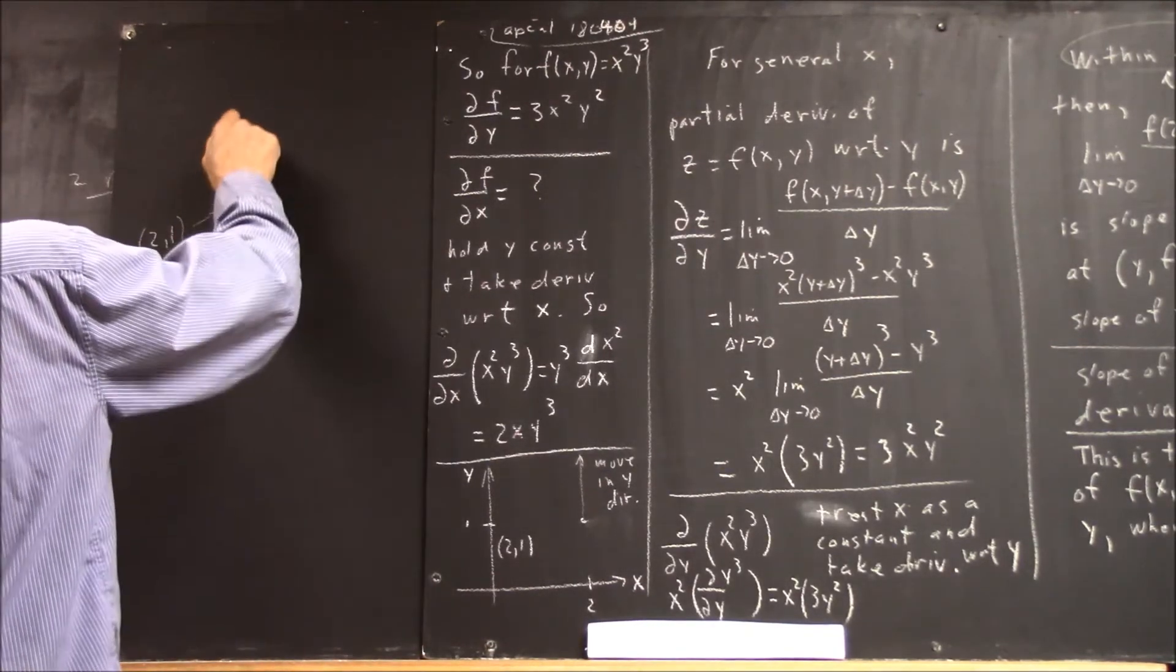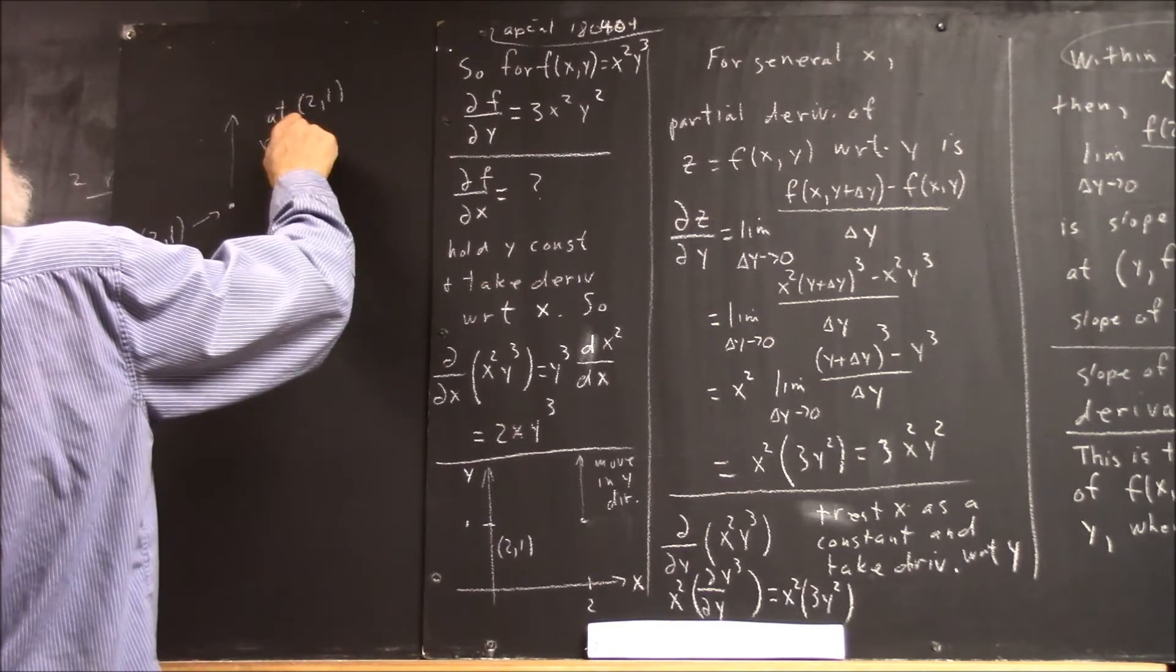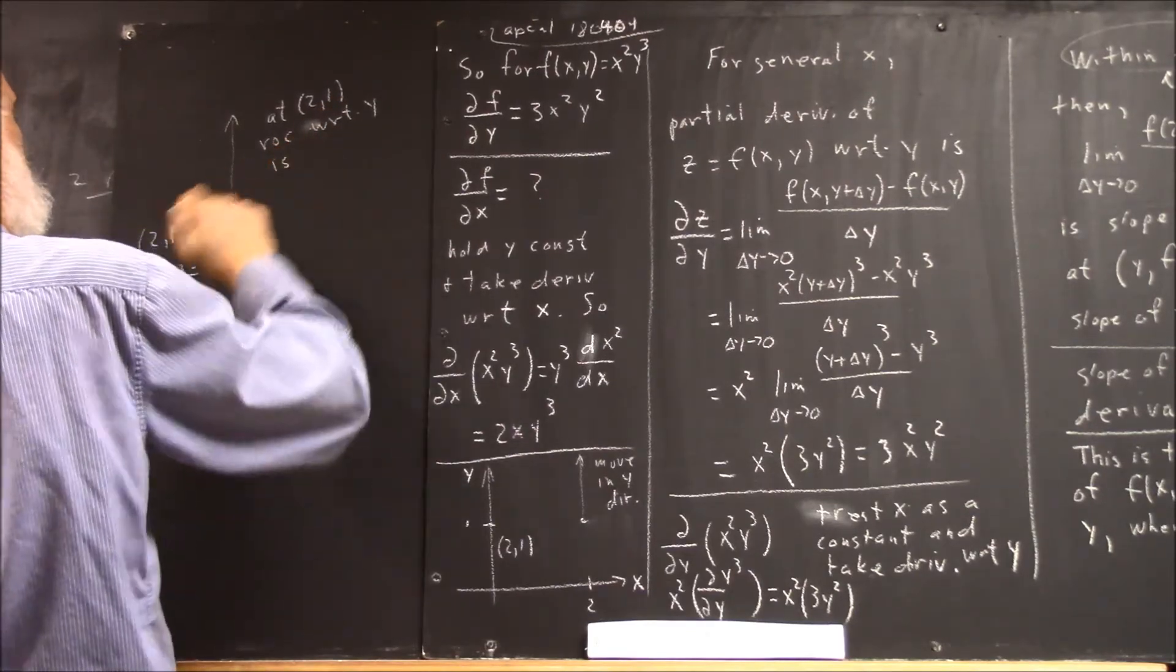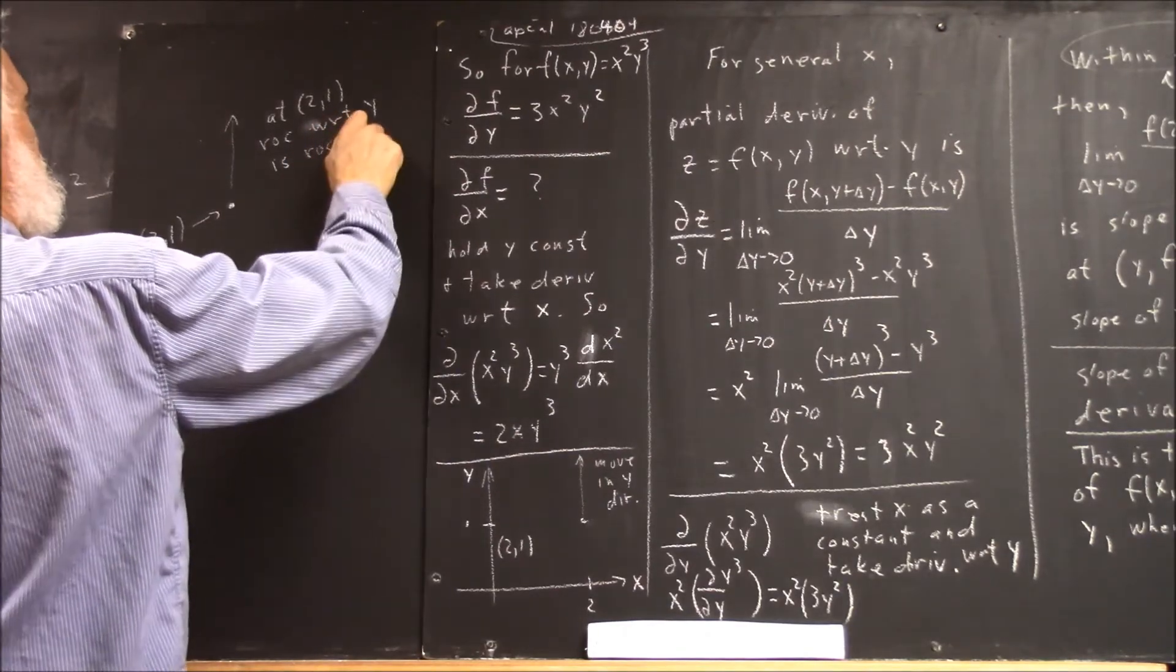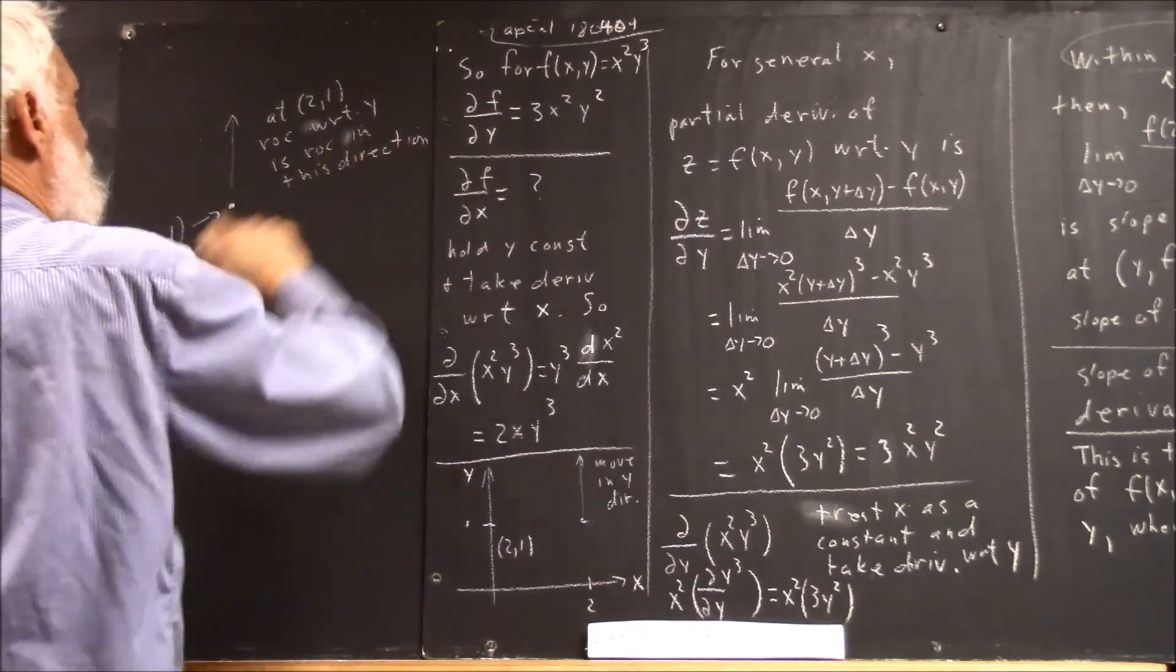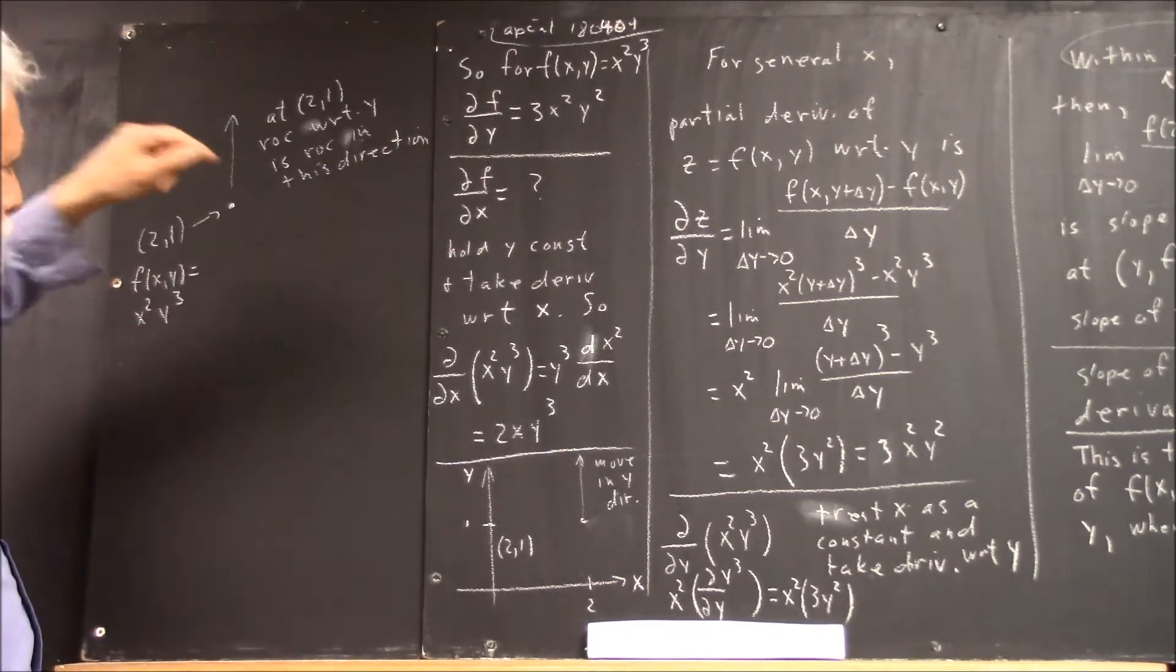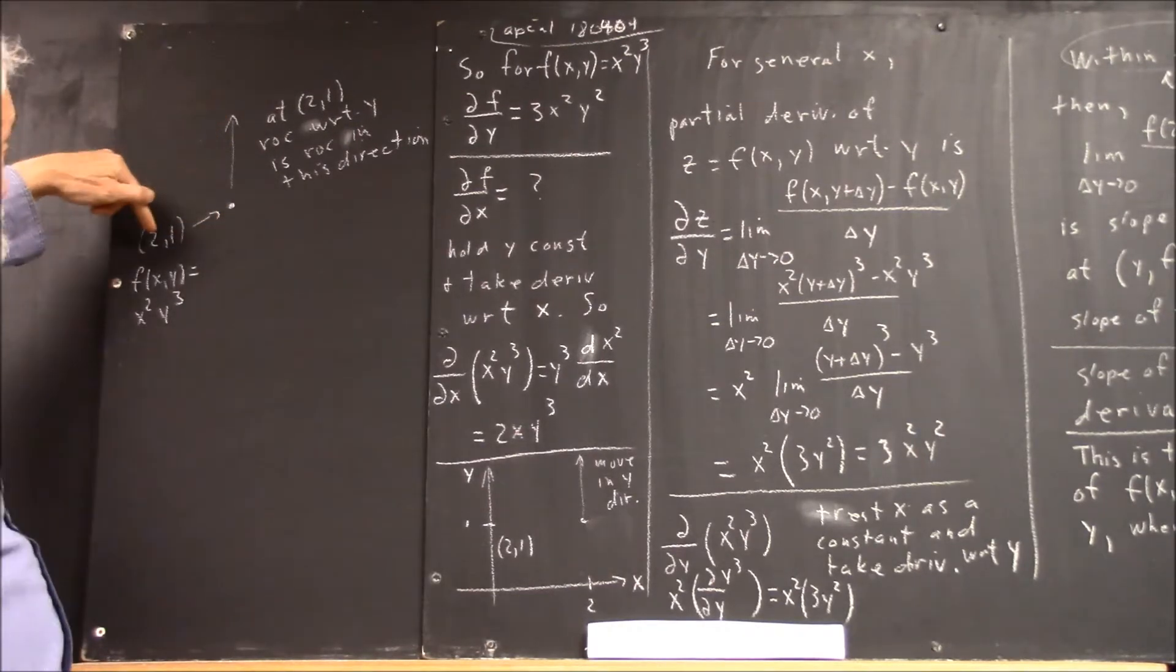The rate of change with respect to y is a rate of change in this direction because that's your y direction. I haven't drawn the x and y axes because right now I want to think of this as being a very small, tiny, little, minuscule neighborhood of 2, 1.